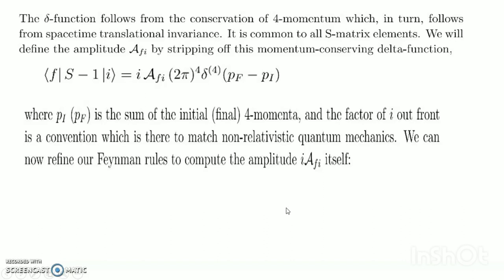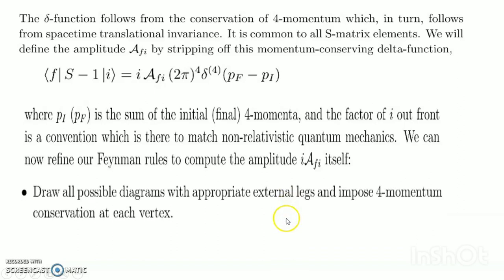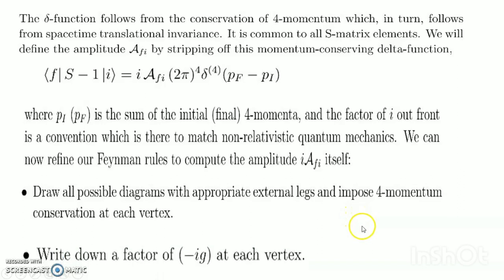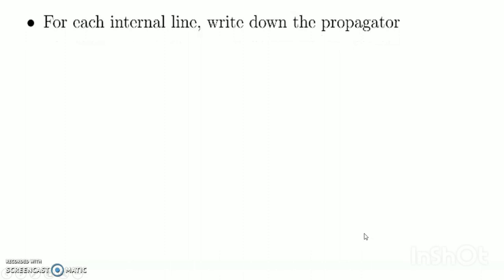We can now refine our Feynman rules to compute the amplitude iA_f itself. Draw all possible diagrams with the appropriate external legs and impose four-momentum conservation at each vertex. Write down a factor of −ig at each vertex. For each internal line, write the propagator and integrate over momentum k following d⁴k/(2π)⁴.